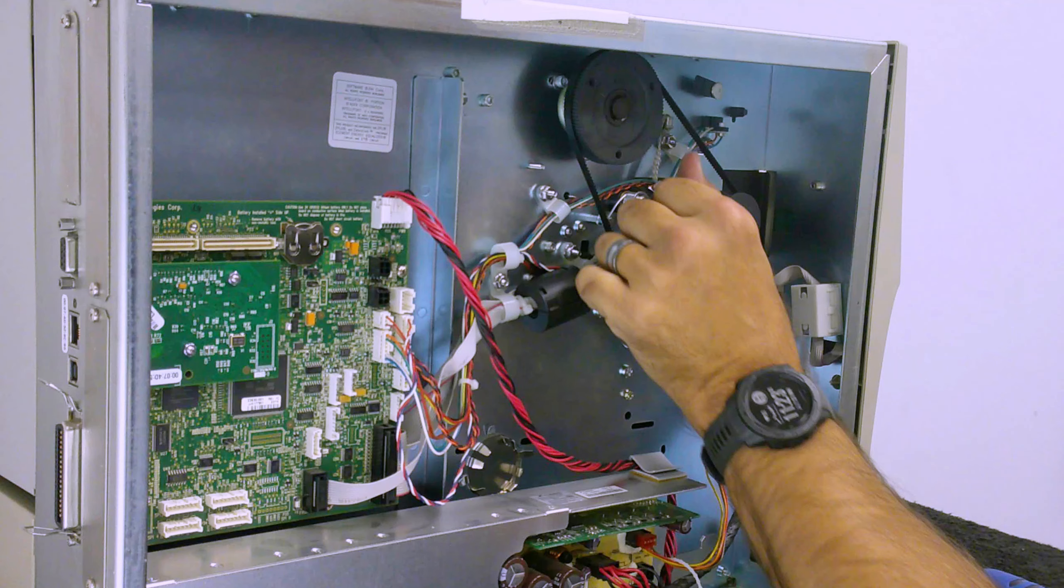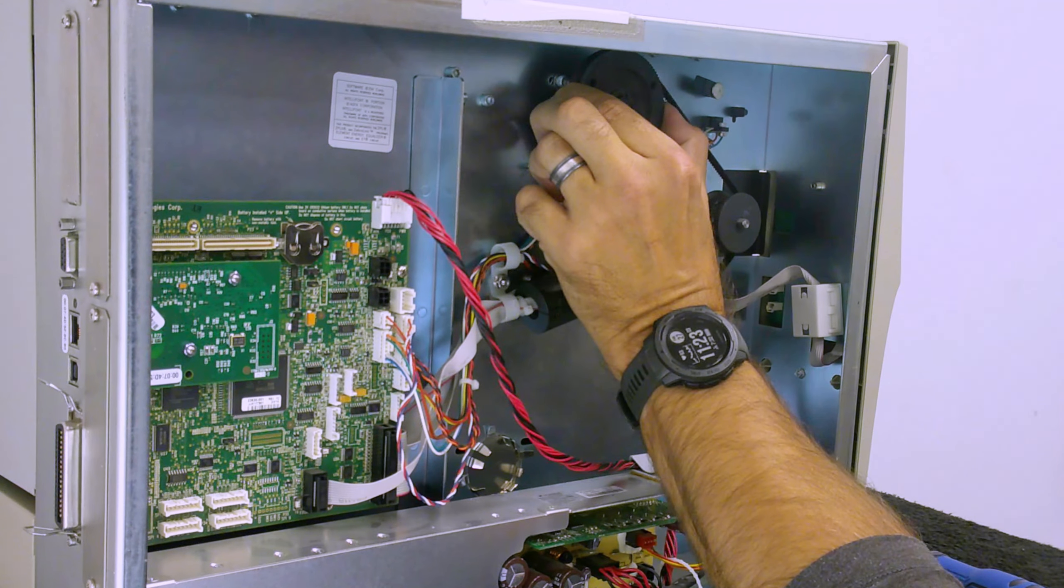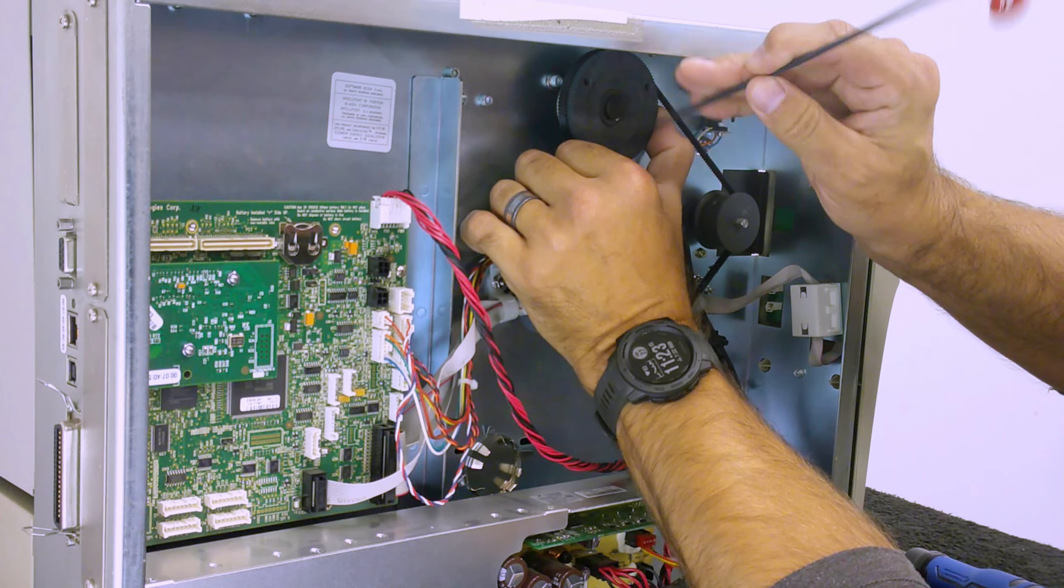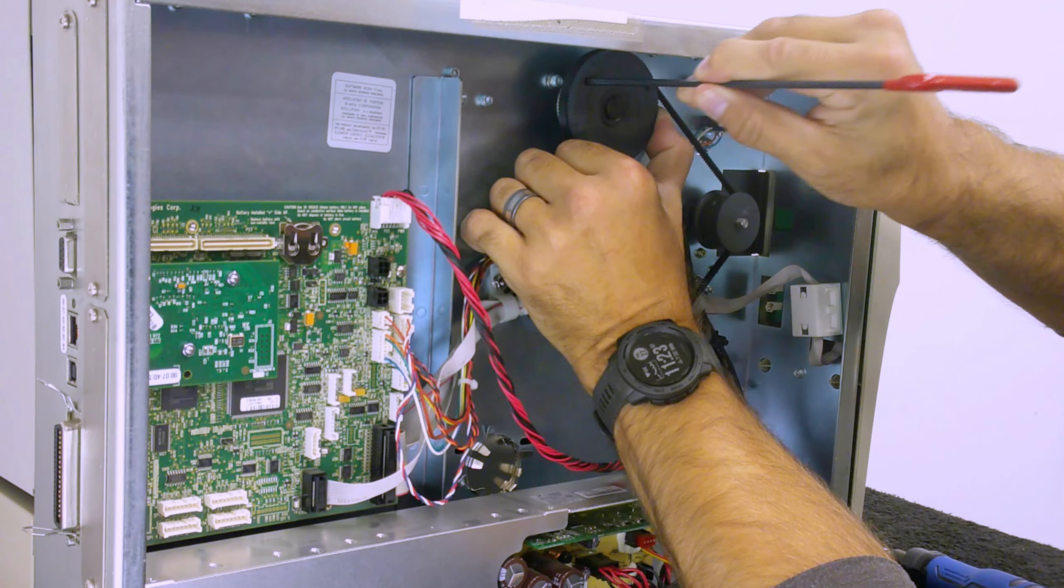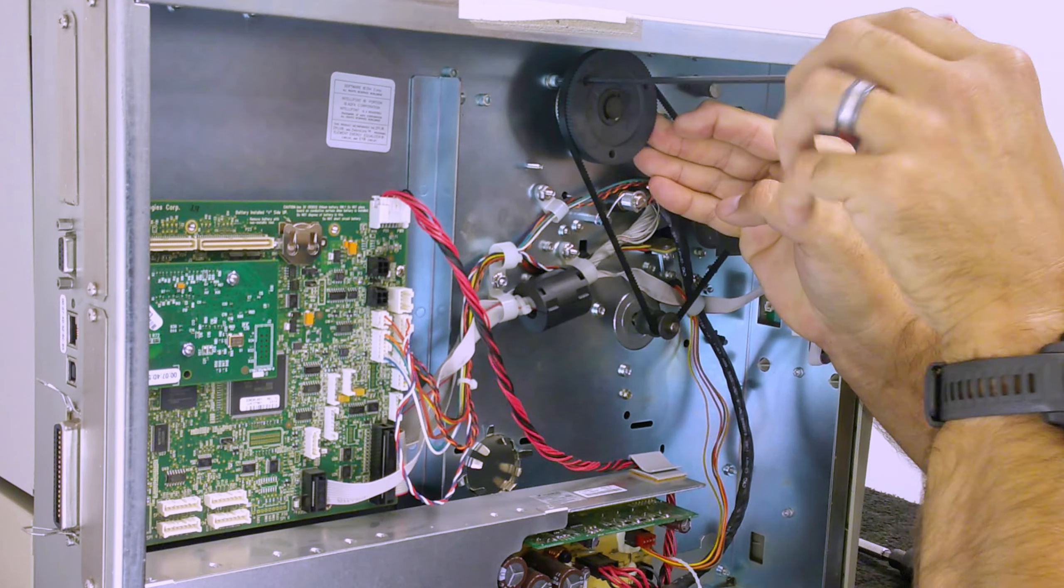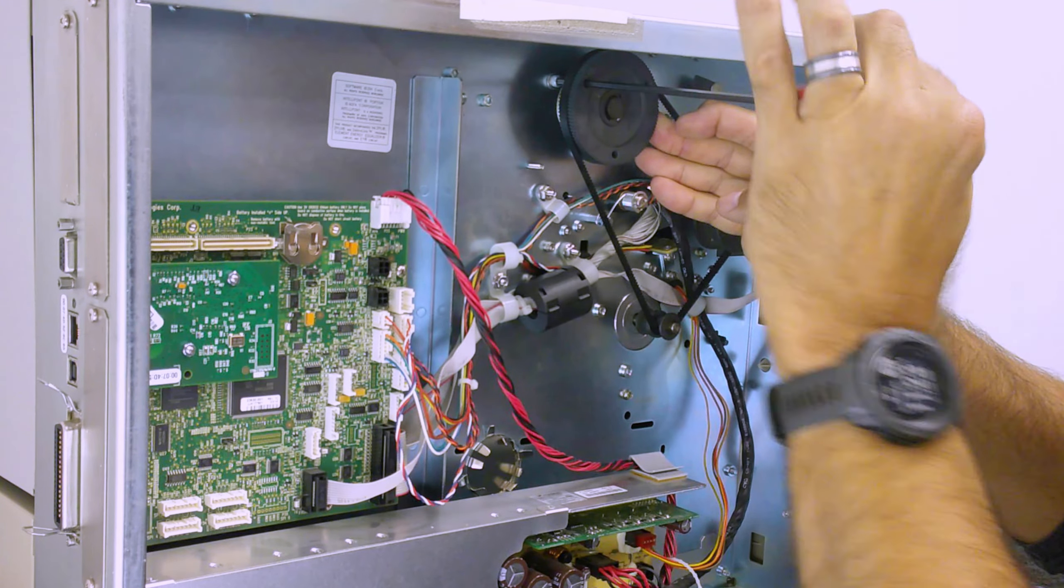Slide the ribbon take-up assembly to the left to increase belt tension. When the belt has proper tension, tighten the three spindle assembly mounting screws.